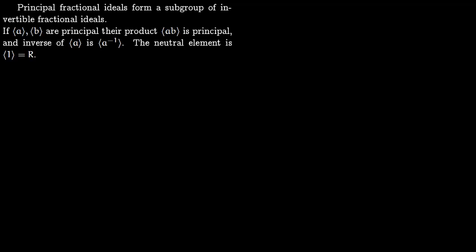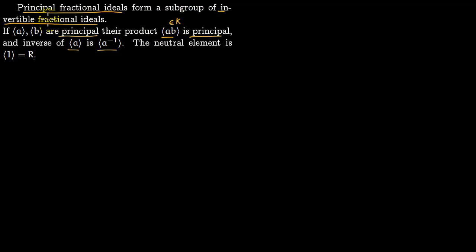In this lecture we talk about the Picard group associated with Dedekind domains. First recall that invertible fractional ideals form a group, and principal fractional ideals form a subgroup of this bigger group of invertible fractional ideals. If A and B are principal fractional ideals, their product is principal, lying in K, the field of fractions of R. The inverse of A is A-inverse, and the neutral element is just the entire ring — this holds even for invertible fractional ideals, which live in the field of fractions K.